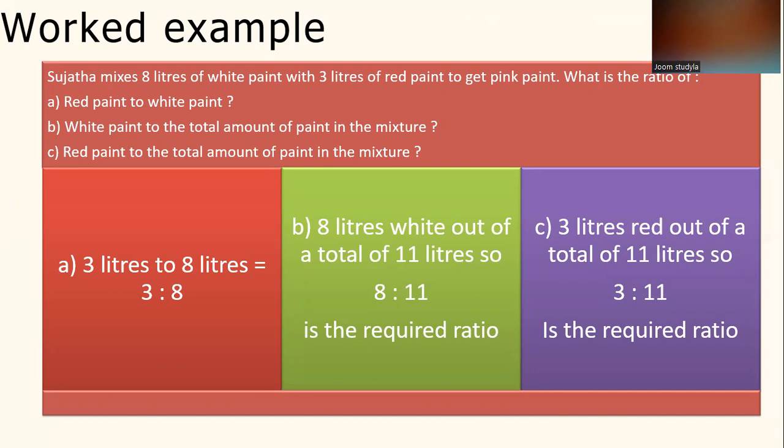For question A, red paint to white paint. We know that Sujata mixes 8 liters of white paint with 3 liters of red paint. So in this case, for question A, red paint to white paint means 3 liters to 8 liters, so 3 to 8.